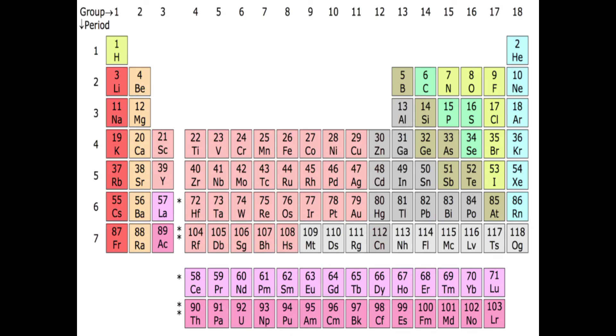First of all, this is a periodic table. The periodic table is arranged in this way. These lines are horizontal rows. These are horizontal rows, these are periods. These are vertical lines, these are groups.